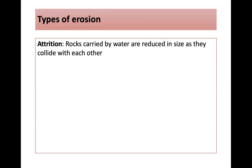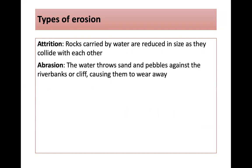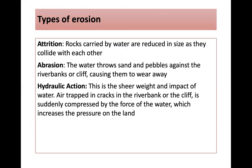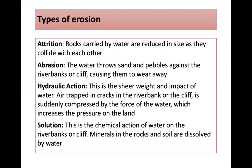There are four different types of erosion operating at the coast and in rivers. Attrition is when rocks carried by water are reduced in size as they collide with each other. Abrasion is when water throws sand and pebbles against a riverbank or cliff, causing them to wear away. Hydraulic action is the sheer weight and impact of water — air is trapped in cracks in the riverbank or cliff and suddenly compressed by the force of water, increasing pressure on the land. Solution is the chemical action of water on the riverbank or cliff, where minerals in rocks and soil are dissolved.